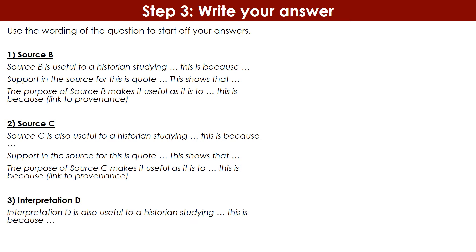For interpretation D, the structure starts the same: 'Interpretation D is also useful to a historian studying...' — insert the focus — '...because...' — there's your inference. But this is where your answer for interpretation D ends differently: you back it up with a quote and expand on what that quote means, but you do not do the purpose for interpretation D, because you don't know enough about the who, what, or when to analyse its purpose. Don't worry about the purpose for interpretation D.